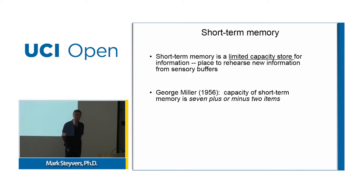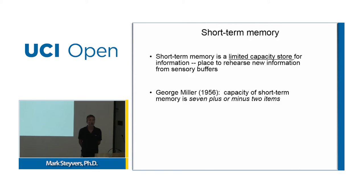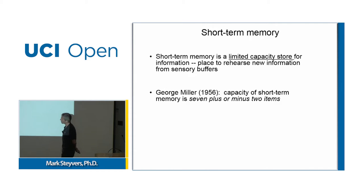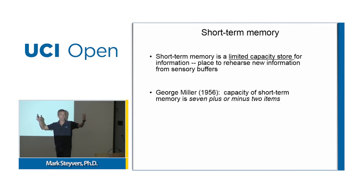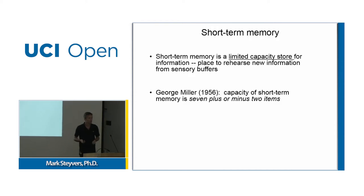George Miller wrote this famous paper in 1956 where he said he was haunted by the number 7. He did tons of experiments and they always showed this very limited capacity for holding on to information in short-term memory.